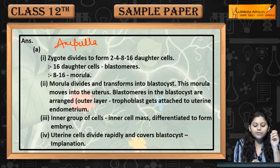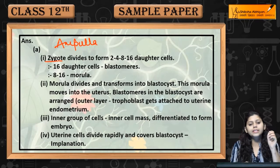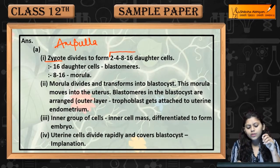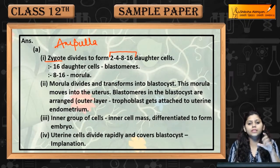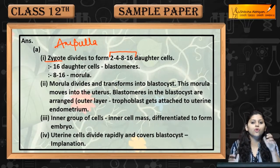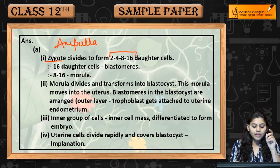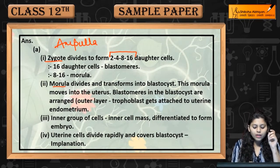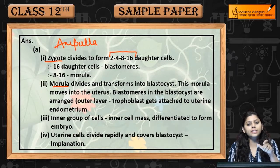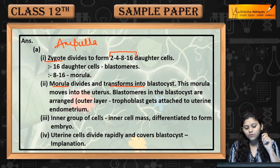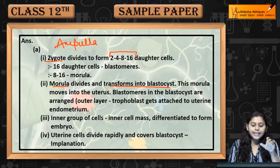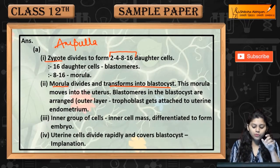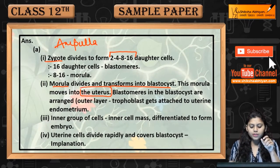Aur process kaise follow karta hai: zygote divide karta hai — two cell, four cell, eight cell, to sixteen daughter cell stage form karta hai, jo hai morula. Yeh morula divide karta hai aur transform into blastocyst. Yeh morula move karta hai into the uterus.